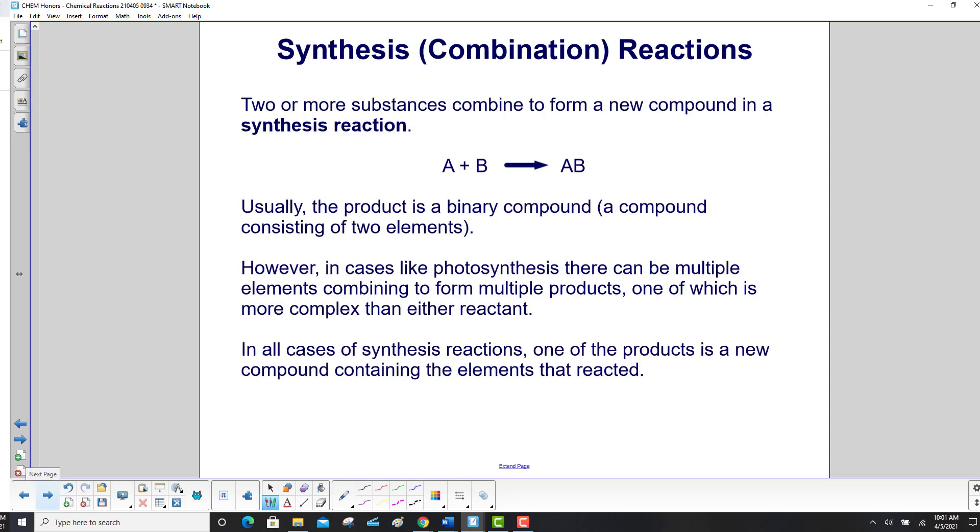Two or more substances combine to form a new compound in a synthesis reaction. Usually the product is a binary compound, a compound consisting of two elements. However, in cases like photosynthesis, there can be multiple elements combining to form multiple products, one of which is more complex than either reactant.